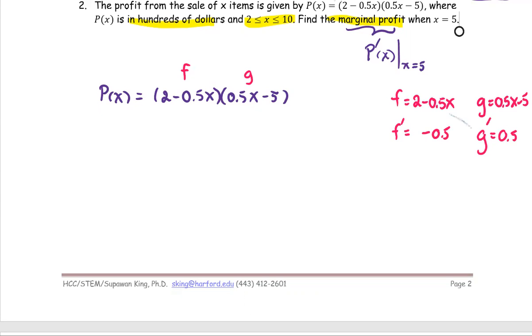Then we're going to put together using the product rule to find the derivative of the profit function. We call it f multiplied by g prime plus f prime multiplied by g. And what we got on the right side, the f is the quantity 2 minus 0.5x multiplied by g prime, which is 0.5.